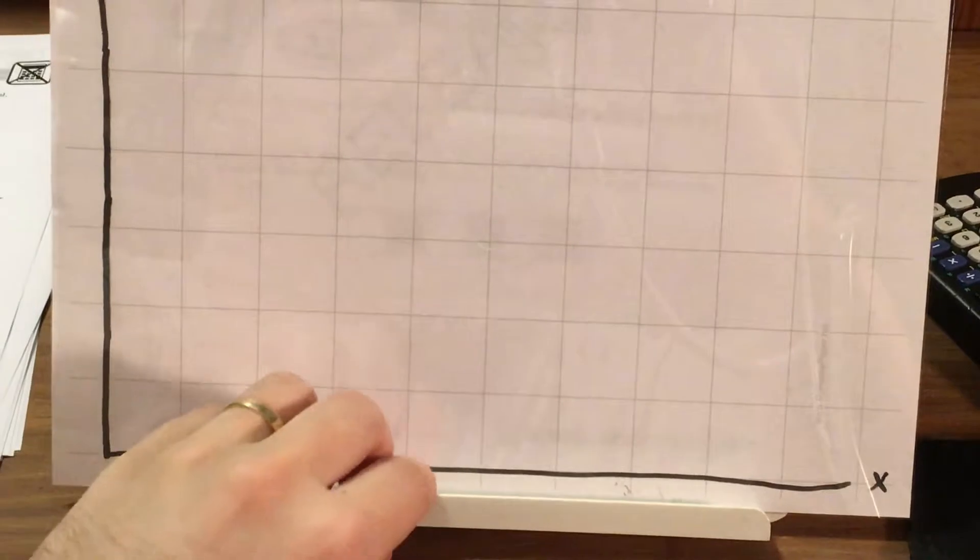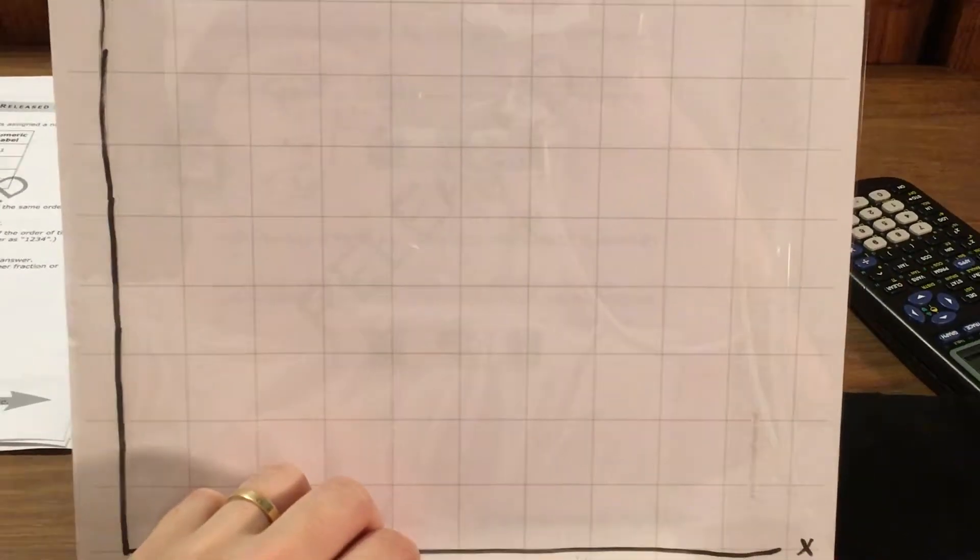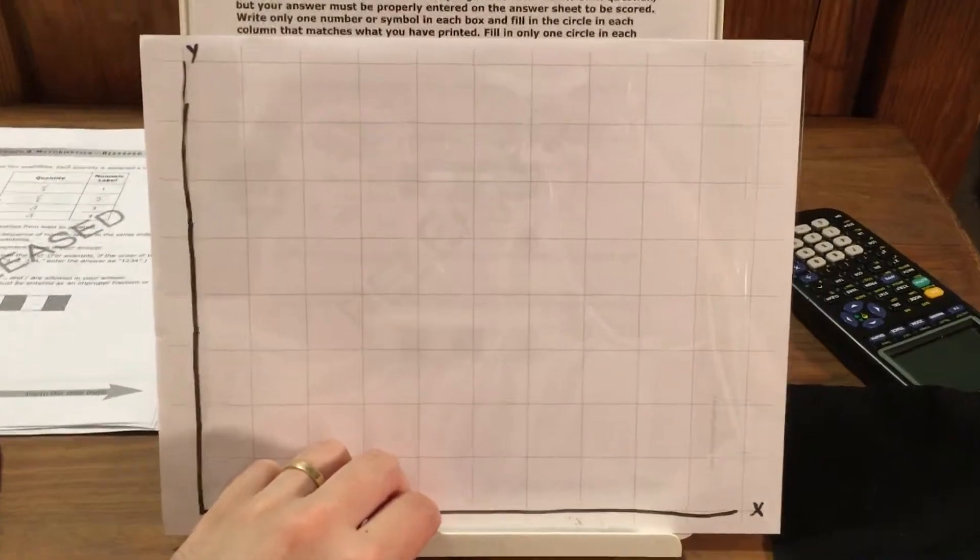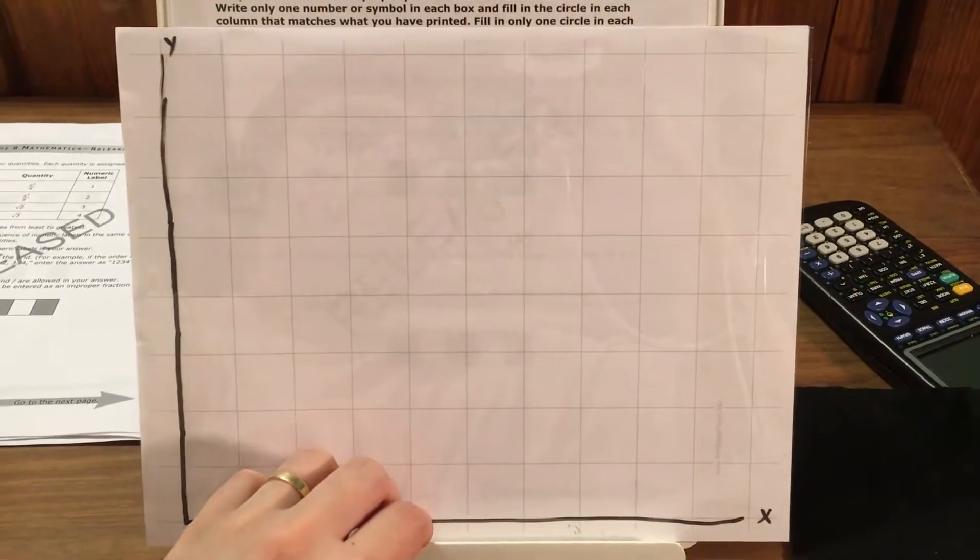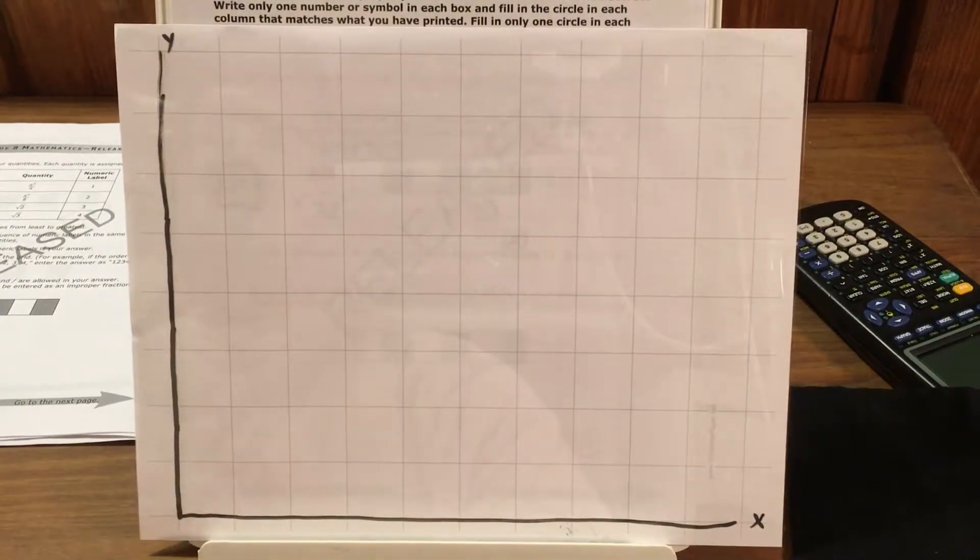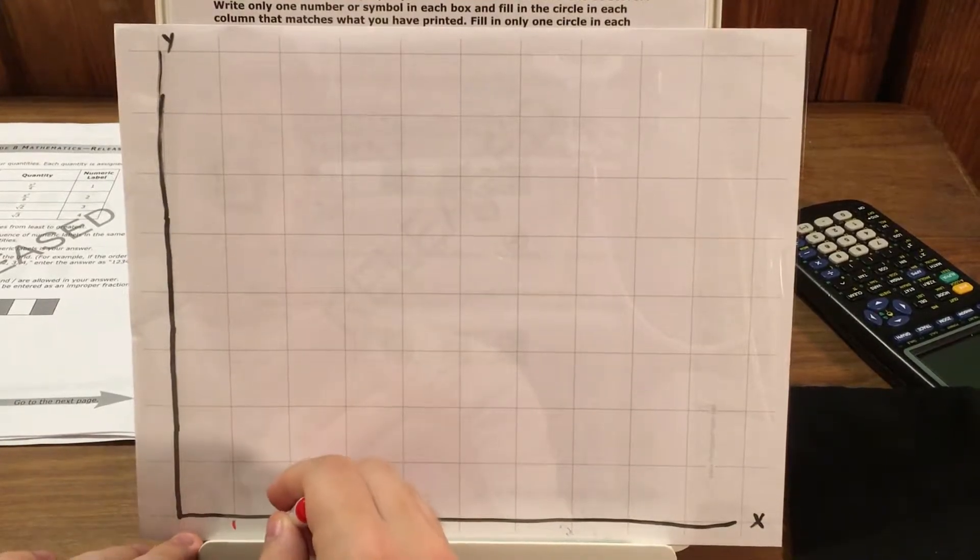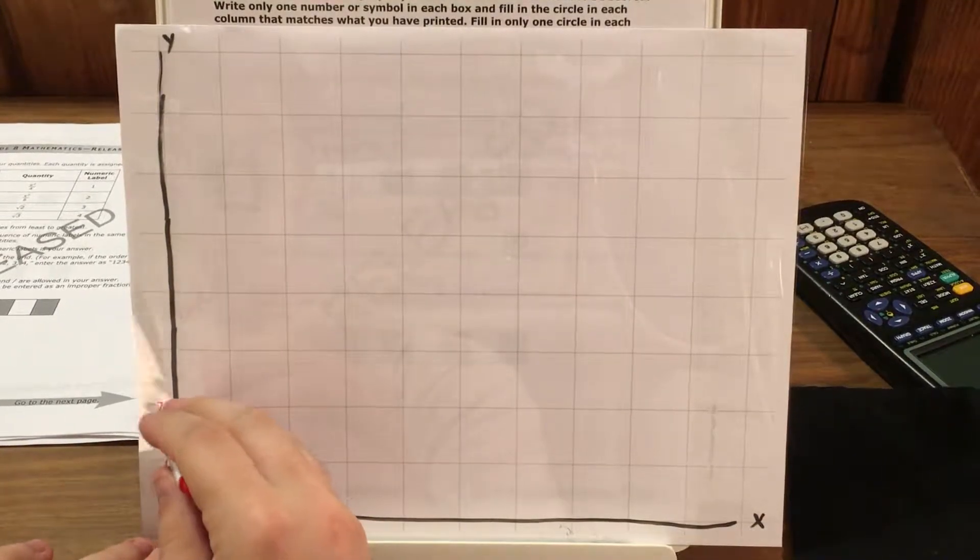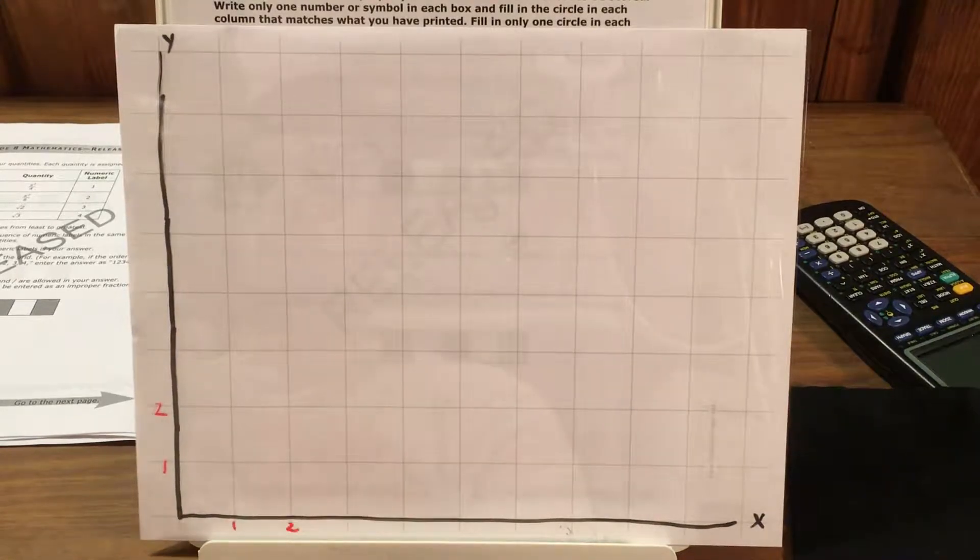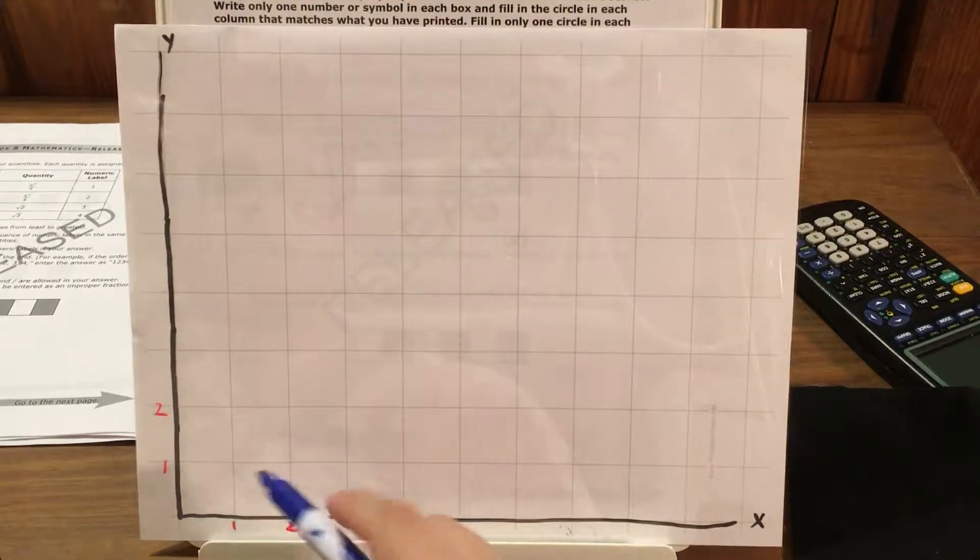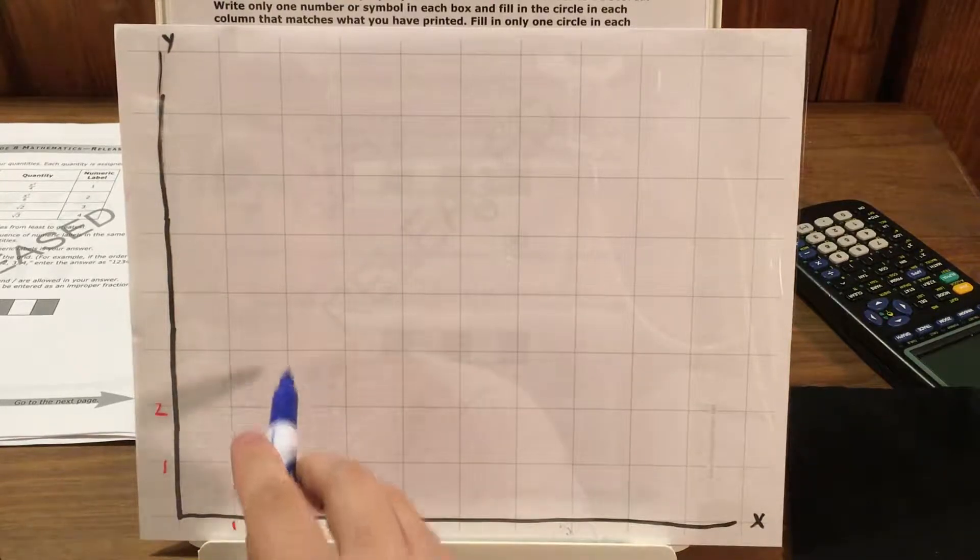So to start with, I'm going to go ahead and put my graph down and zoom that out. So my two points, and we'll assume each of these is just one, so 1, 2, 1, 2. My two points are the point x of 2, y of 3, so that's right 2, and up 3.